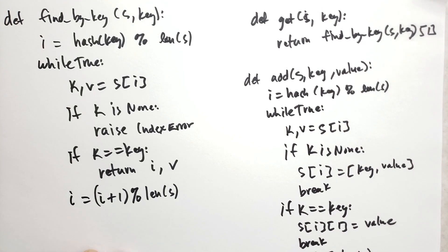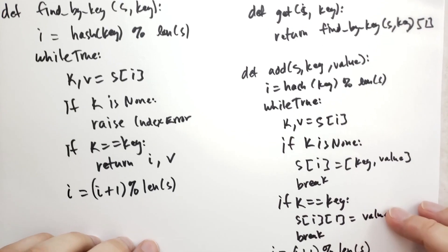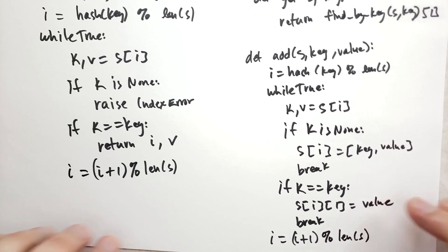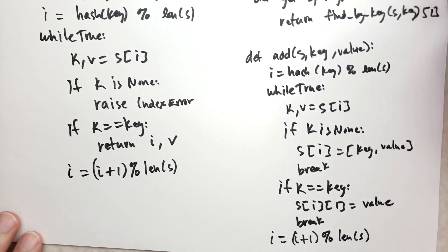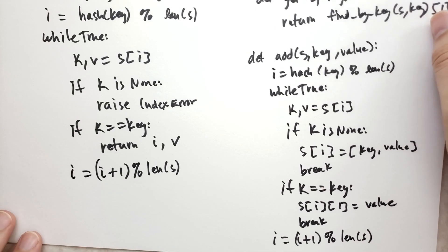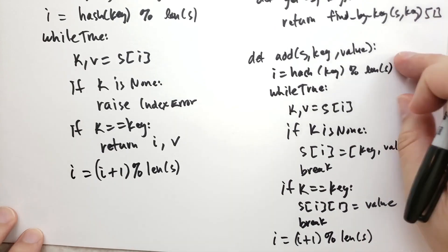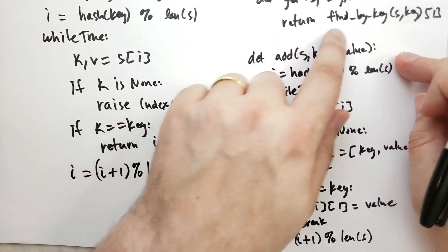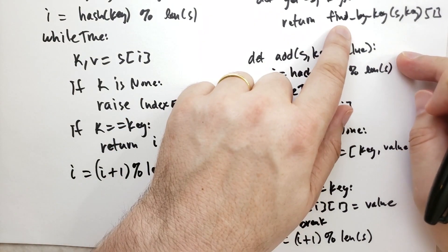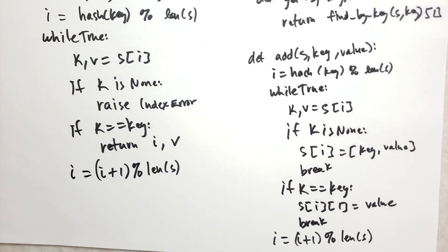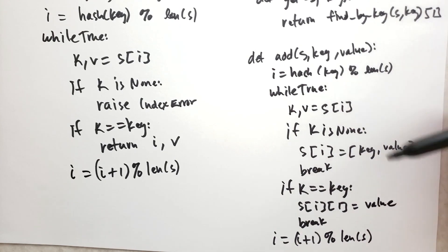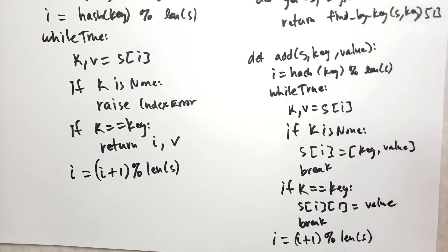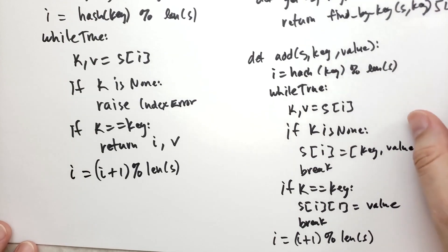Deleting a key is pretty straightforward — we use the same findByKey method and delete that index. Note that when you delete, you have to shift the items after it down if they should have belonged earlier. So delete is not quite as simple as get.